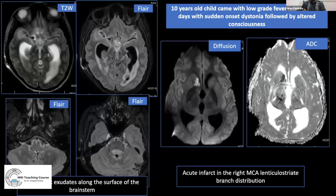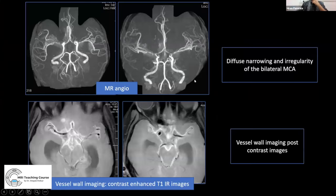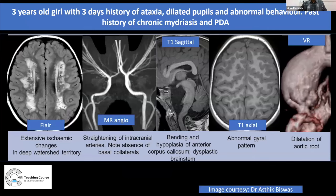Tuberculosis is not uncommon as a cause of stroke-like symptoms in children. Imaging shows hydrocephalus and significant enhancement along the basal cisterns and Sylvian fissure. This basal exudate can compress vessels causing small vessel infarcts — for example, infarcts in the right basal ganglia. MR angiogram showed narrowing of bilateral MCAs, and vessel wall imaging showed enhancement along the walls of bilateral MCAs, indicating an infective or inflammatory etiology to guide clinical management.